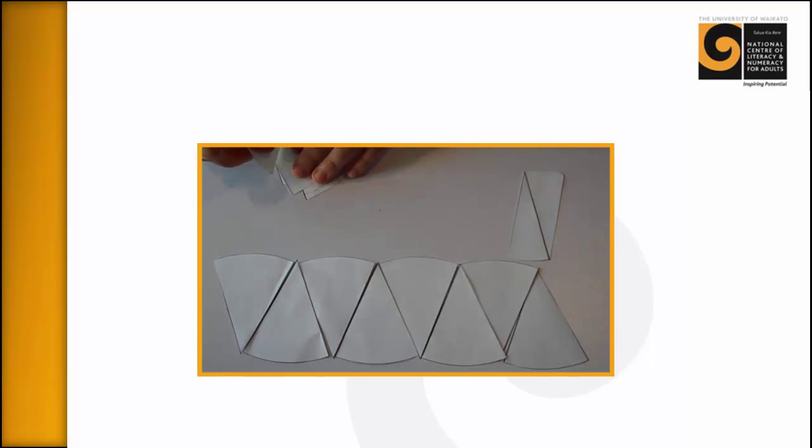The next strategy is to ask the learners to cut each of these sectors in half. Sometimes I have these pre-cut, but often I'll just give them a pair of scissors and ask them to cut each of these sets in half and then rearrange them again to make a rectangle.